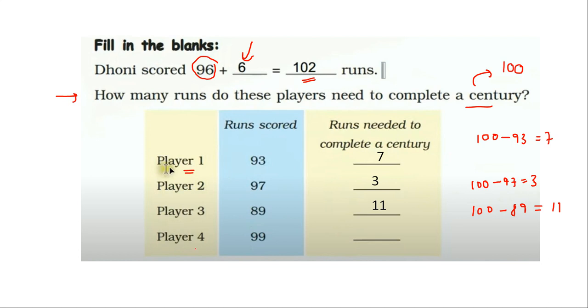How many runs does player 4 need? 100 minus 99 is equal to 1. Player 4 needs just 1 run to complete a century.